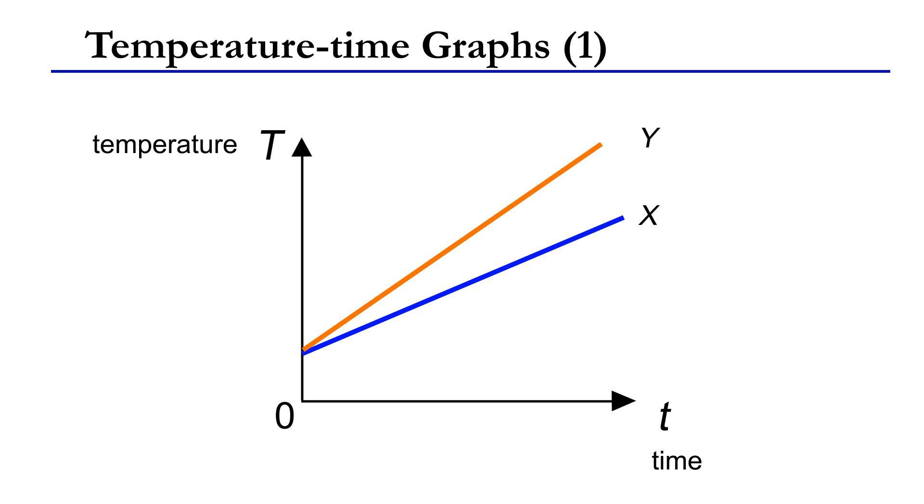Alternatively, we can draw a horizontal line cutting the temperature axis at T1. For the same temperature change, Y takes a shorter time. Since Y requires less heat for the same temperature change, it has a smaller heat capacity. Again, CY less than CX.